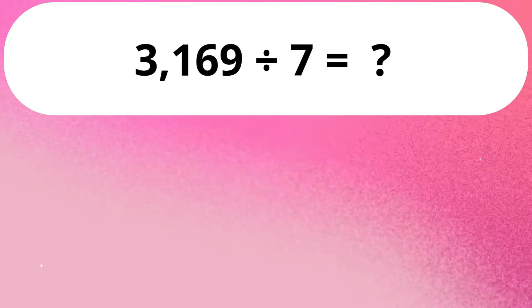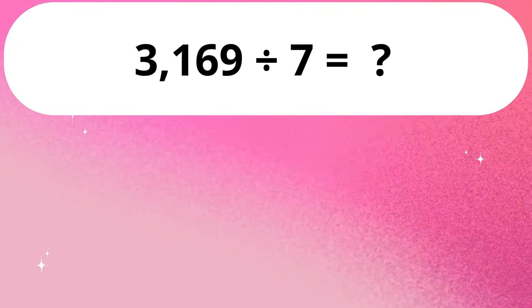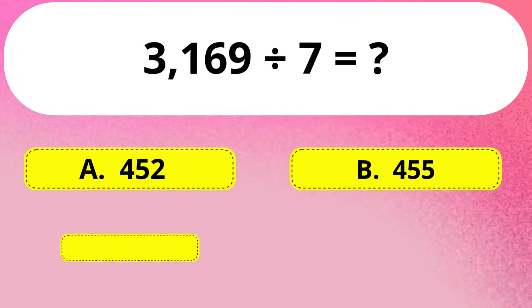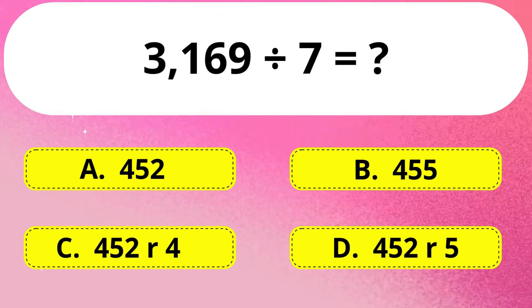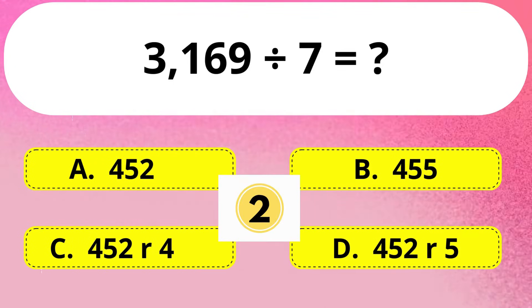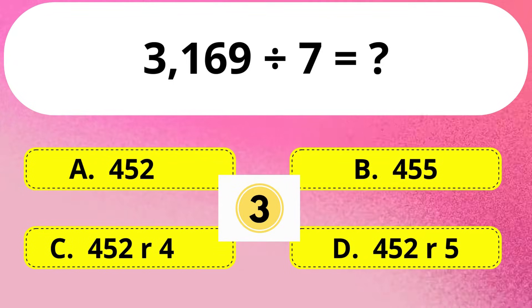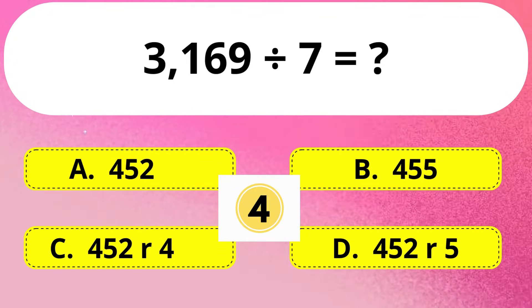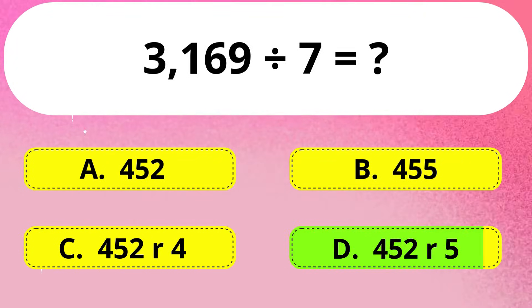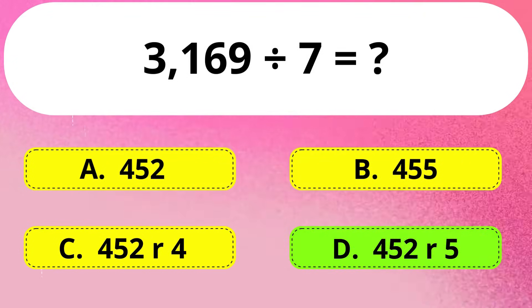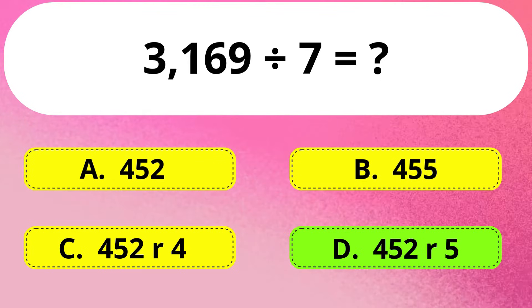Next question. 3,169 divided by 7 is equal to how much? The answer is Option D: 452 as the quotient and remainder 5.